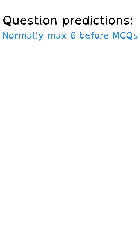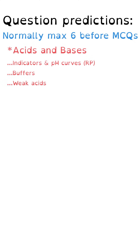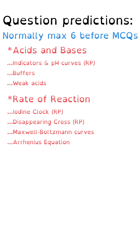Section A normally has a maximum of six questions, and here are the six topics I think are most likely to come up. Acids and bases — that could be pH curves, buffer calculations, or weak acids. The rate equation — so the iodine clock, disappearing cross, Maxwell-Boltzmann curves, or the Arrhenius equation are the most likely subtopics.